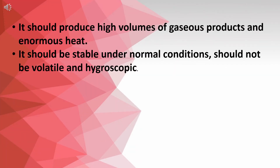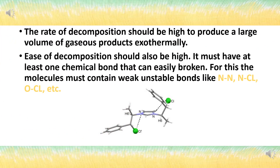An explosive should produce high volume of gaseous product and enormous heat. It should be stable under normal conditions, should not be volatile and hygroscopic. The rate of decomposition should be high to produce a large volume of gaseous product exothermally. Rate of decomposition should also be high. It must have at least one chemical bond that can easily be broken. The molecule must contain weak non-stable bonds like N-N, N-Cl, O-Cl, etc. From here, Bhavya will take over.